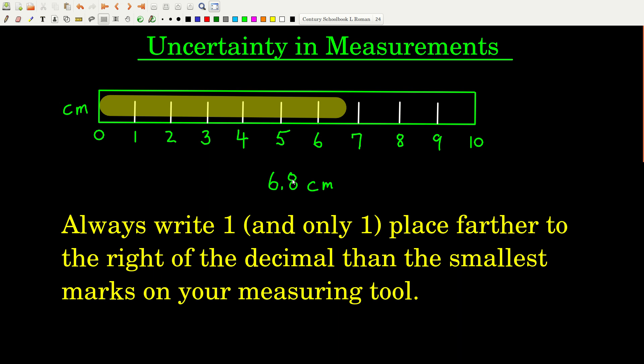If you said 6.7 centimeters, there's nothing wrong with that. It's understood that the last digit you write in a measured number, there's some uncertainty in it. Now, here's the thing. Even though there is some uncertainty in this number, this eight, for example, it still counts as a significant figure. So this measured number would have two significant figures in it. And that's always the case. That's the rule. So you know when you look at a number that came from a measurement, you know that wherever the last significant figure is, that the marks were one place to the left of that apart.